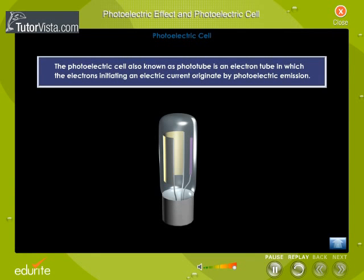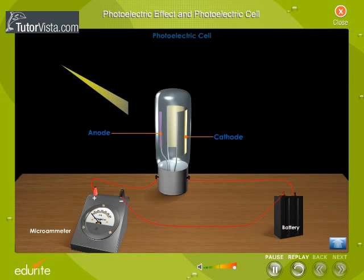The photoelectric cell, also known as a phototube, is an electron tube in which the electrons initiating an electric current originate by photoelectric emission. A phototube consists of a cathode coated with a photosensitive material and an anode. Light falling on the cathode causes the liberation of electrons, which are then attracted to the positively charged anode.